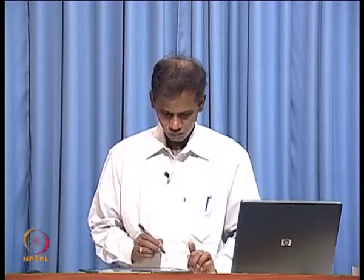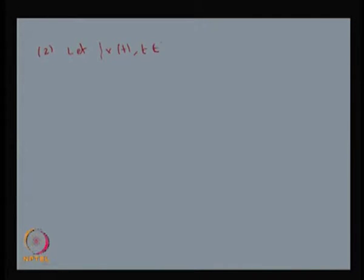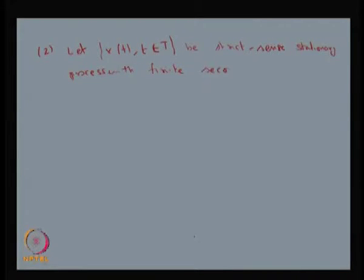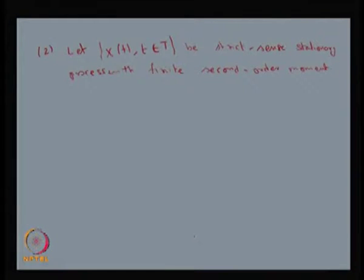Let me start with the example in which this stochastic process is a strict sense stationary process. The given X(t) is a strict sense stationary process with finite second-order moment. You do not necessarily need the finite second-order moment for a strict sense stationary process, but in this example the given X(t) is taken as a strict sense stationary process along with the finite second-order moment.